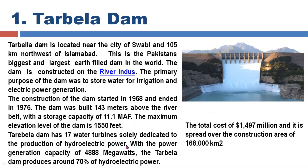Tarbela Dam has 17 water turbines solely dedicated to the production of hydroelectric power, with a power generation capacity of 4,888 megawatts. Tarbela Dam produces around 70 percent of hydroelectric power in Pakistan. The total cost of Tarbela Dam is 1,497 million dollars, and it is spread over a construction area of 168,000 square kilometers.